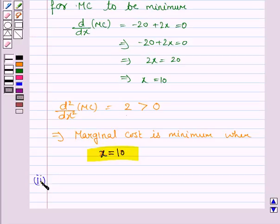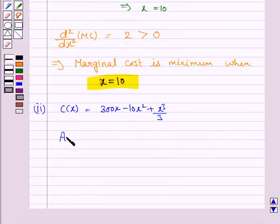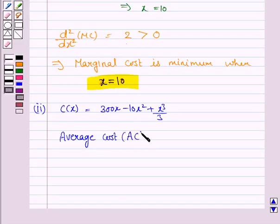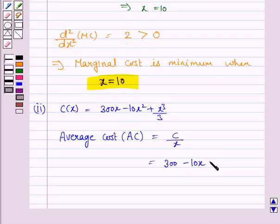In the second part, we have to minimize the average cost. The cost function is given as 300x minus 10x squared plus x cubed by 3. The average cost AC is given by C divided by x. Dividing through by x, this equals 300 minus 10x plus x squared by 3.